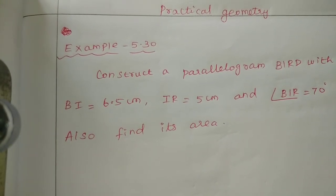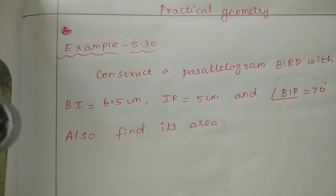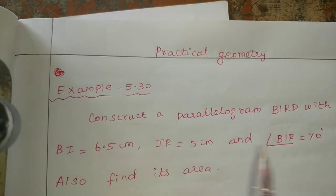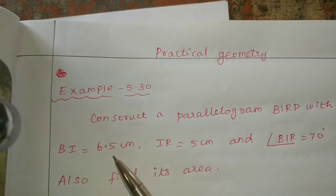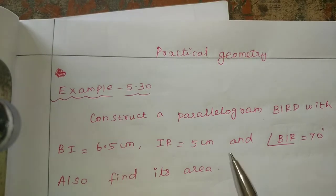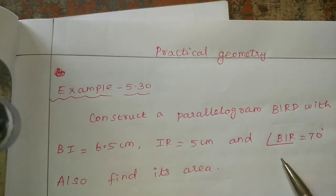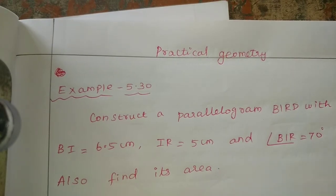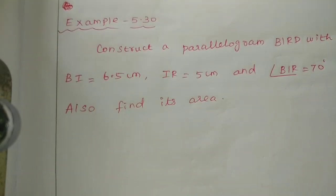Hello friends, I am Saranya. In the 8th Standard Maths, Chapter 5, Exercise 5.5, Example Sum 5.30: Construct a parallelogram BIRD with BI equal to 6.5 cm, IR equal to 5 cm, angle BIR equal to 70 degrees. Also find its area.